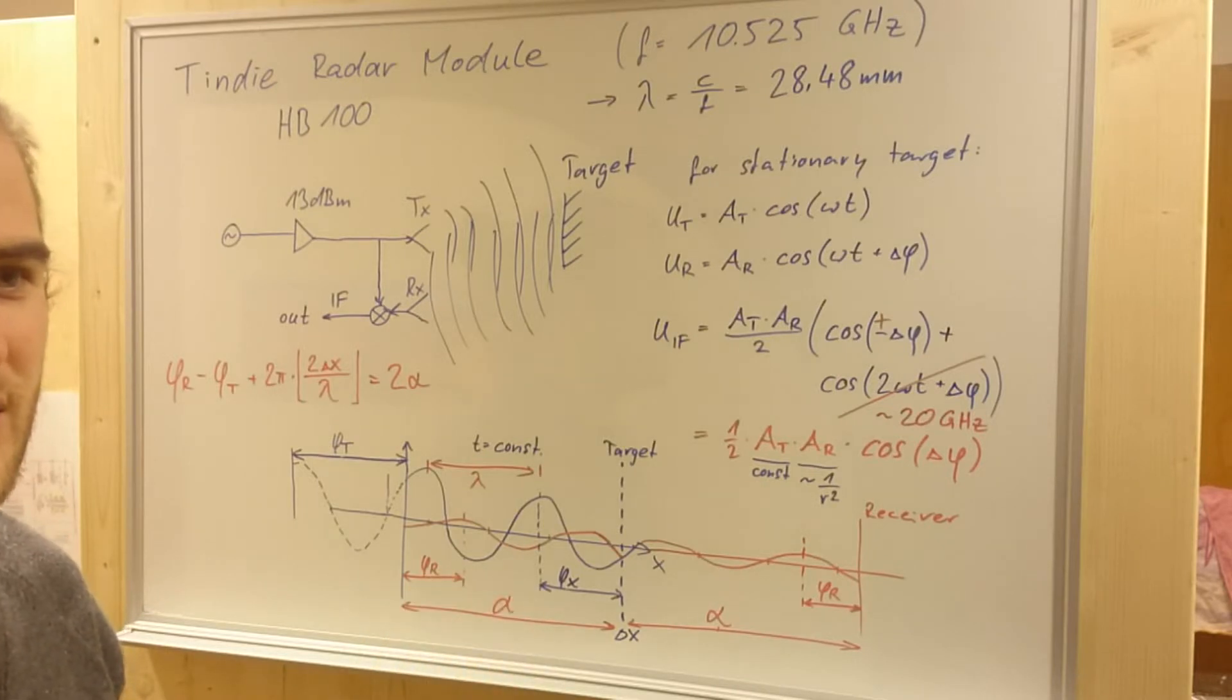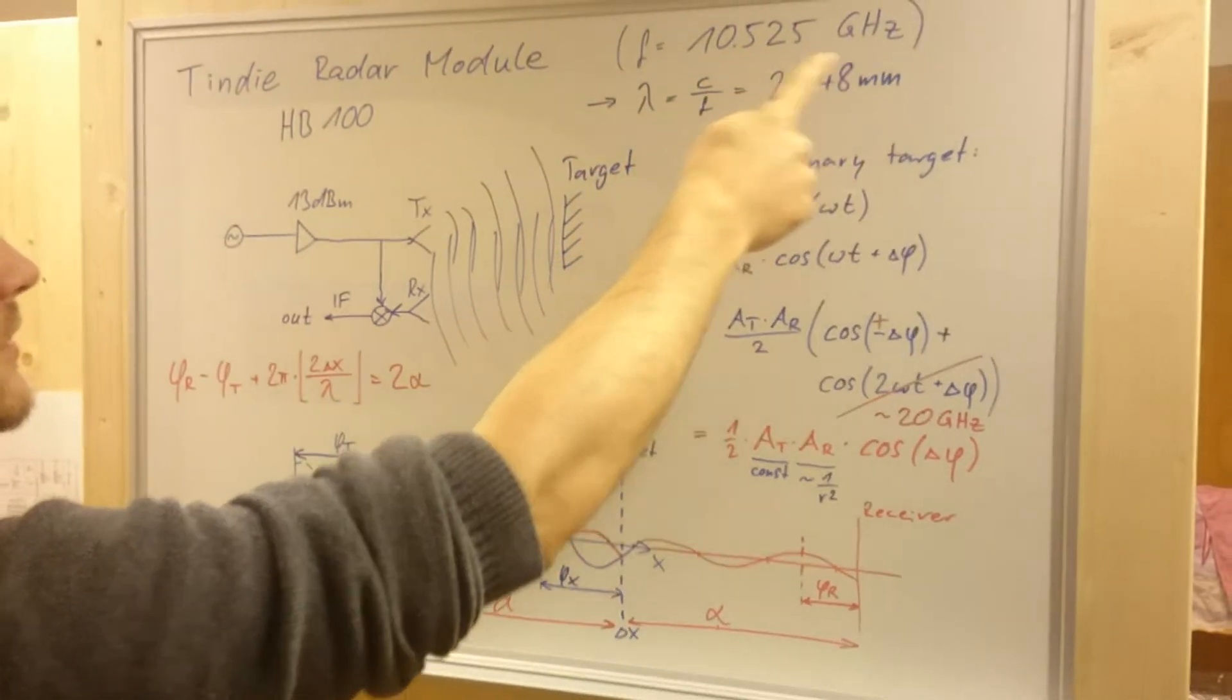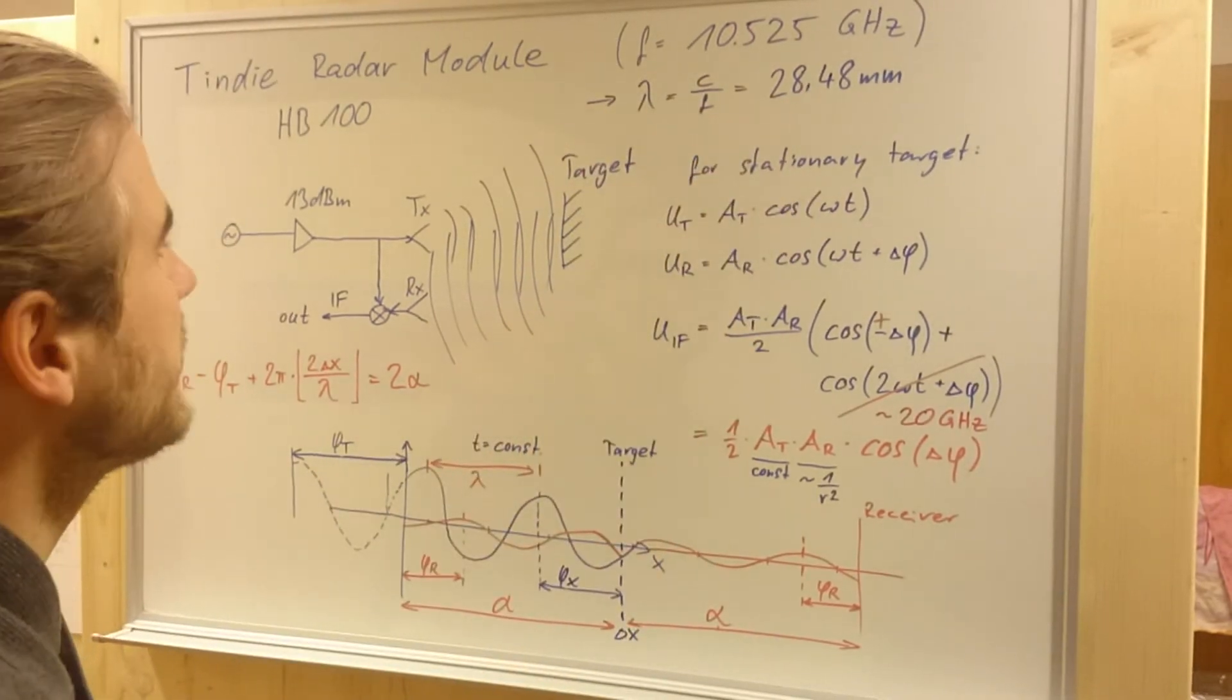What frequency do you get for what velocity? As I said, the frequency 10.525 gigahertz. This has, in the free air, a wavelength of about 28 millimeters.